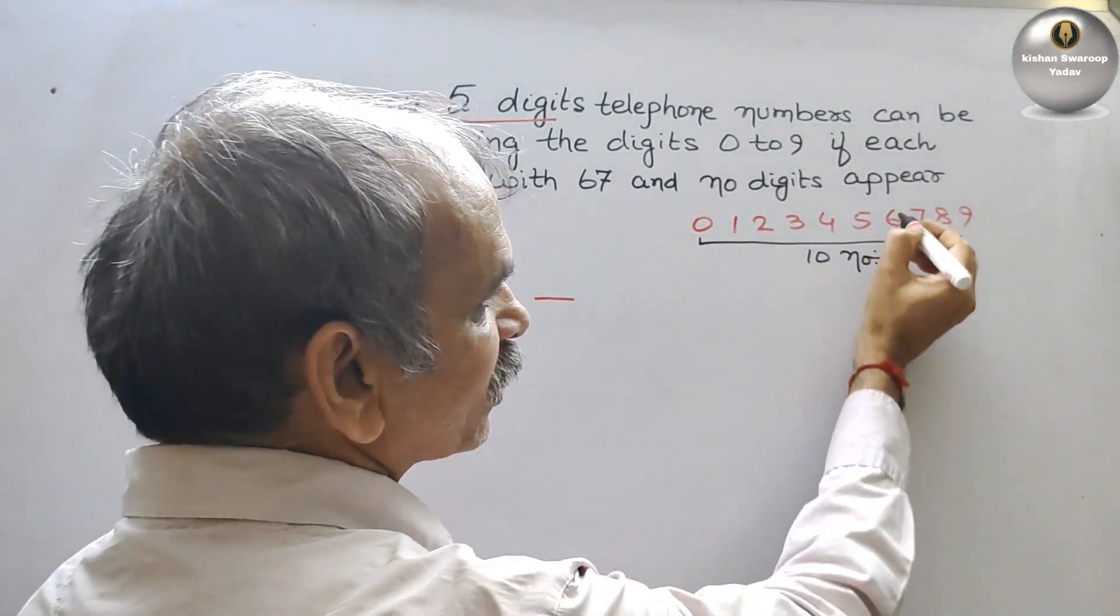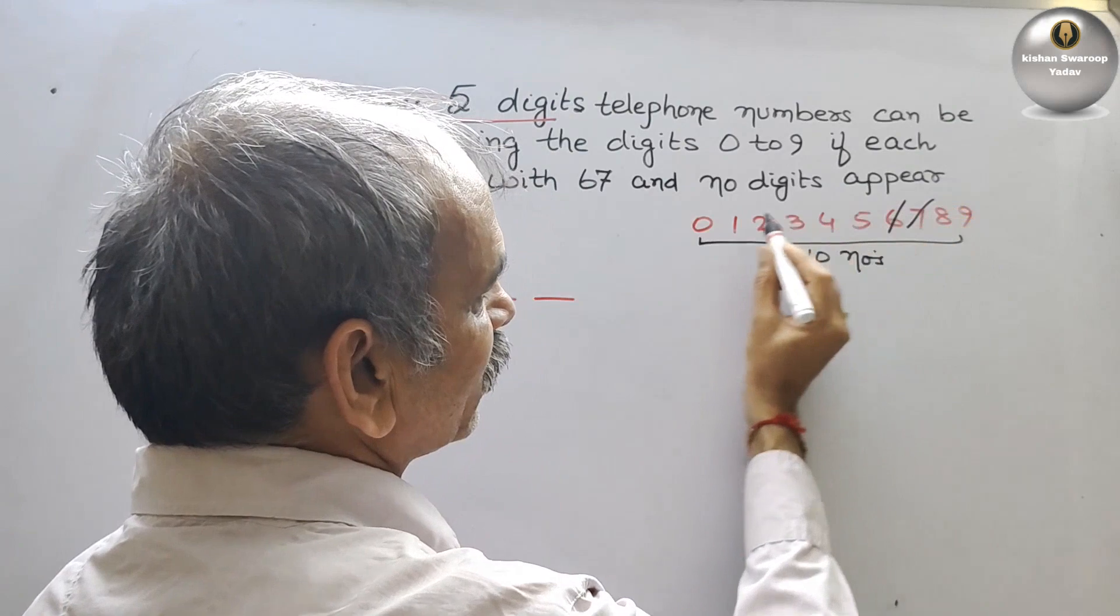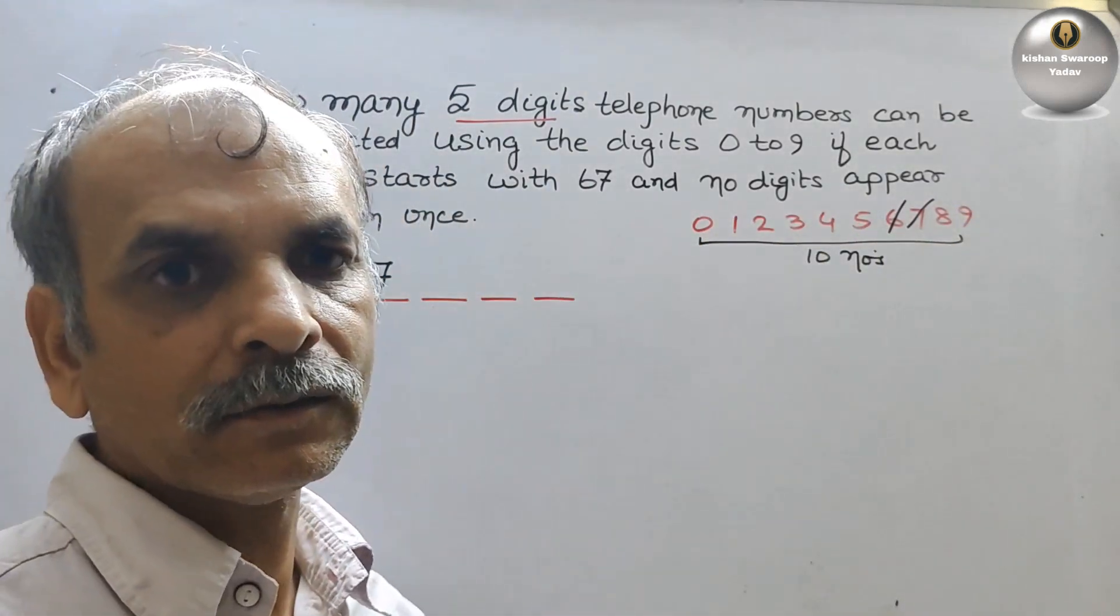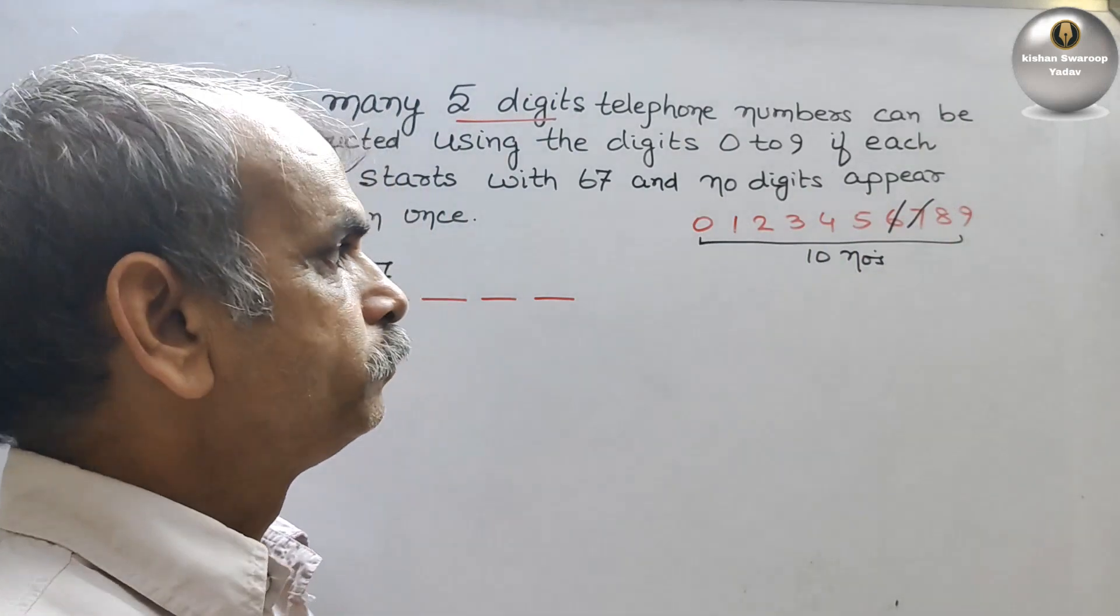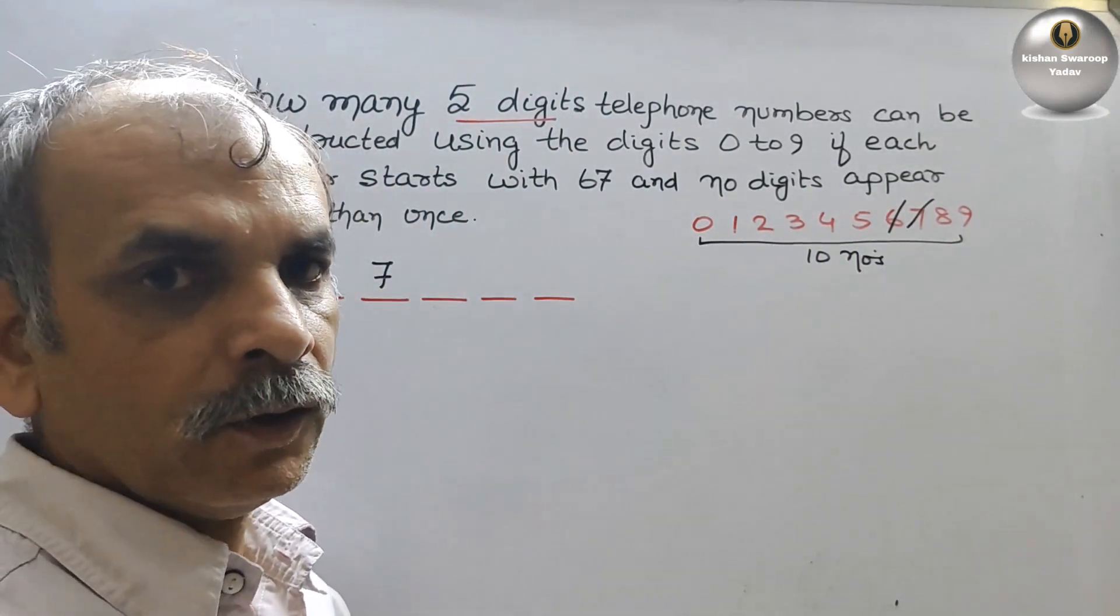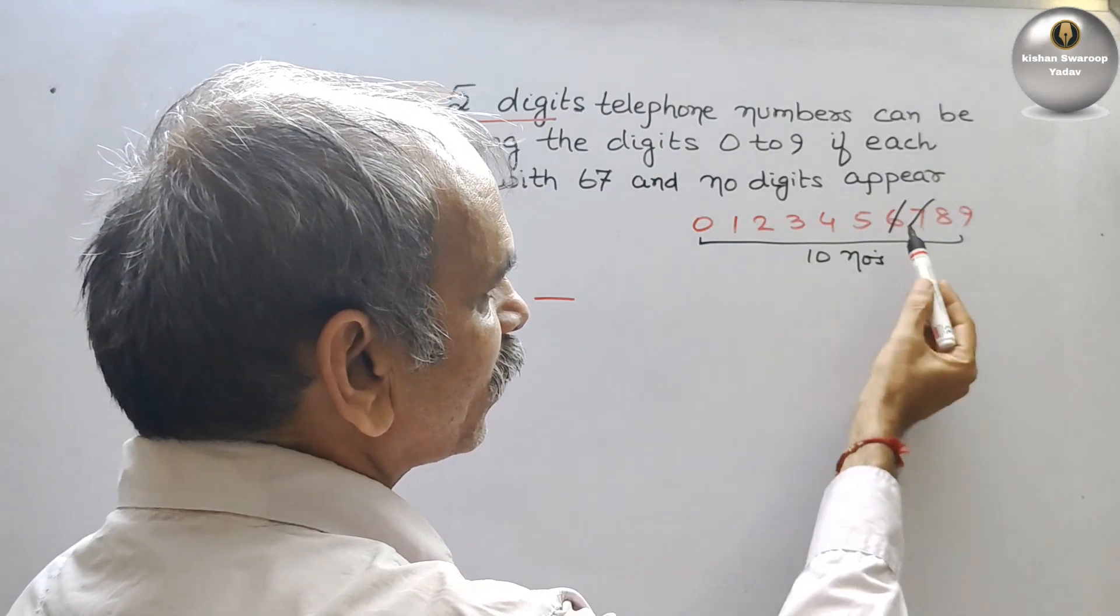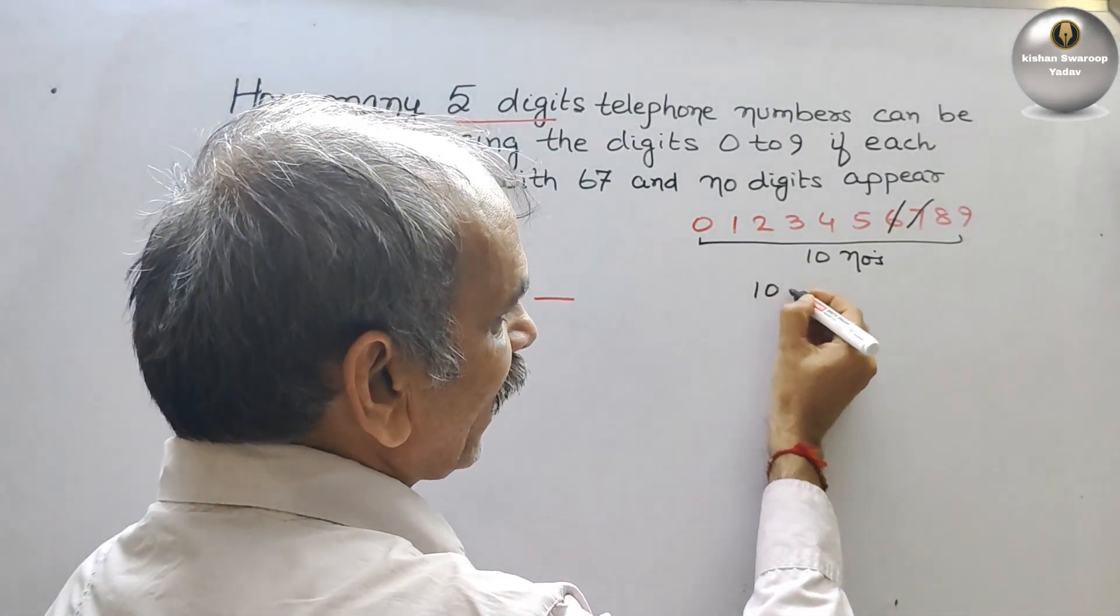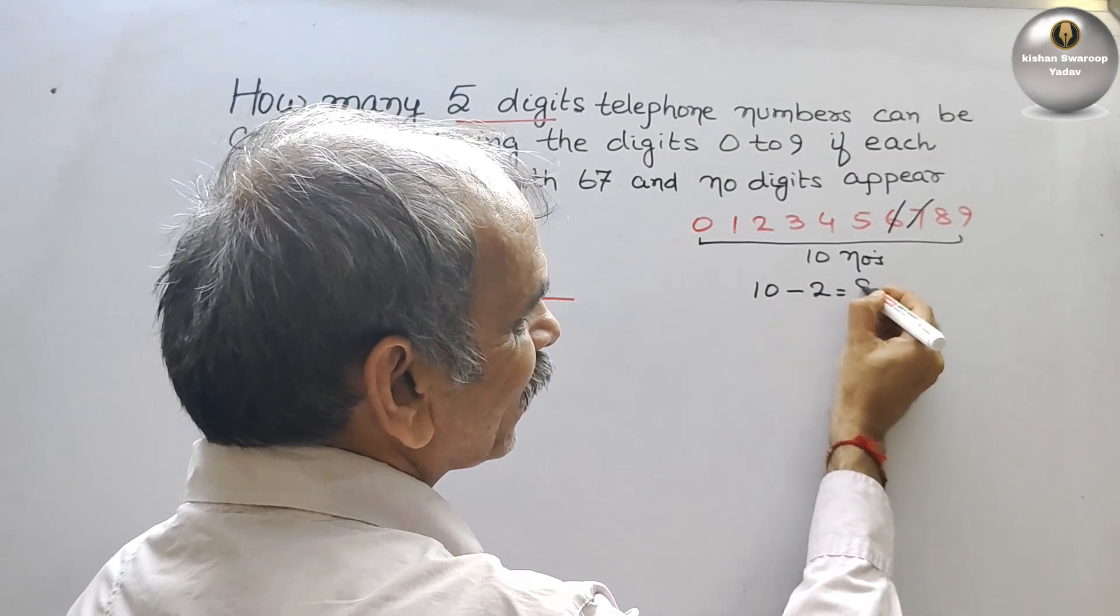So that means we will strike out 6 and 7. Why? Because they have told no digit appears more than once. So now, remaining see that these are your remaining, your 8 numbers. So we can say 10 minus 2 is your 8 numbers.